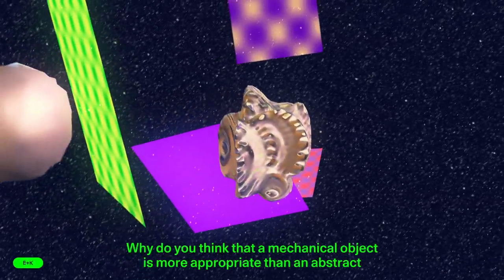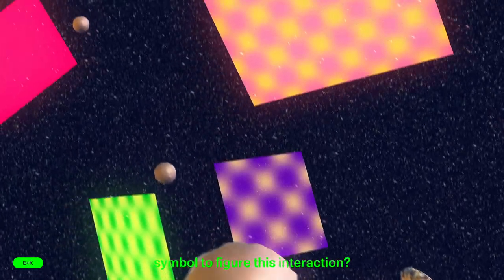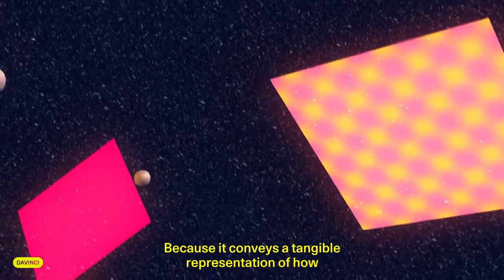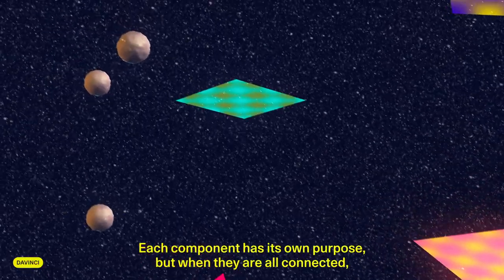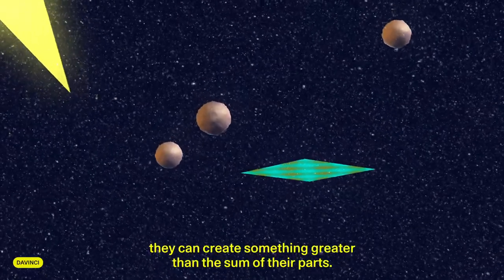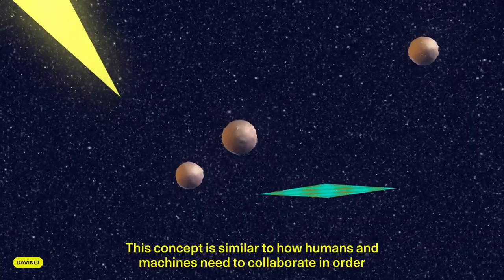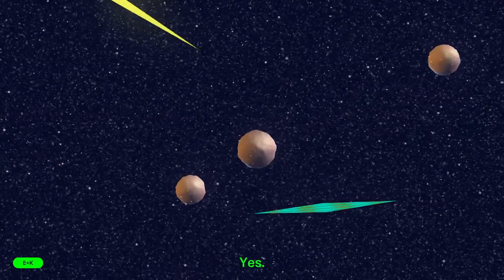Why do you think that a mechanical object is more appropriate than an abstract symbol to figure this interaction? Because it conveys a tangible representation of how both must work together. Each component has its own purpose, but when they are all connected, they can create something greater than the sum of their parts. This concept is similar to how humans and machines need to collaborate in order for ML technologies to be used effectively.